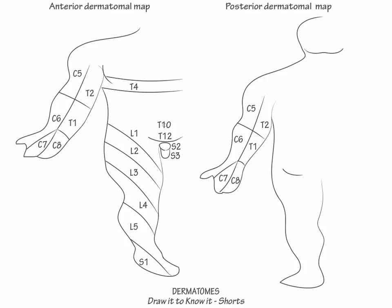Next, draw the posterior lower extremity and gluteal coverage. Show that the coccyx covers the center of the anus, and then show the dermatomal rings that surround it. The innermost is S5, then going outward is S4, then S3, and then show that S2 encircles S3.